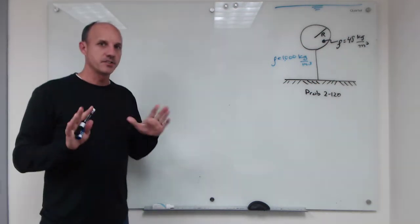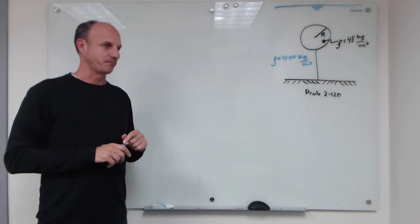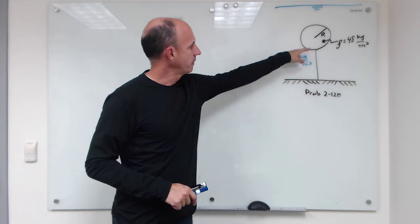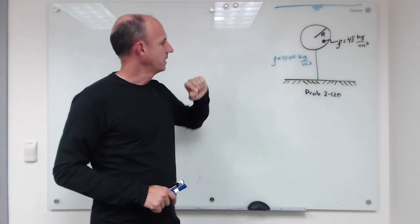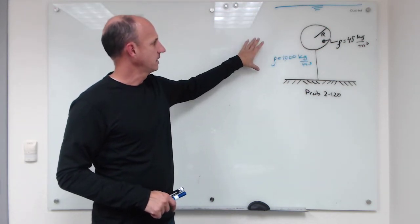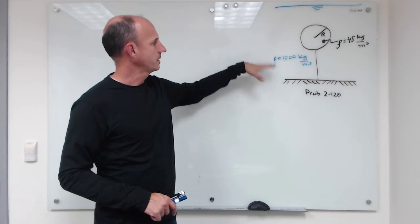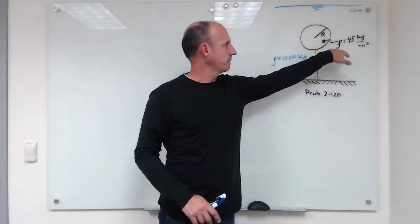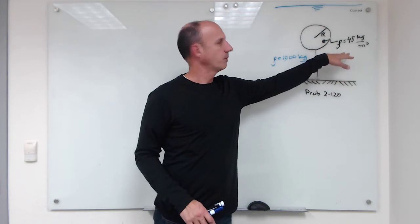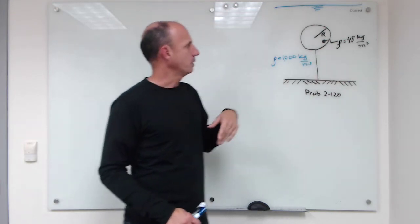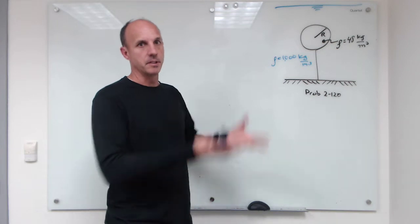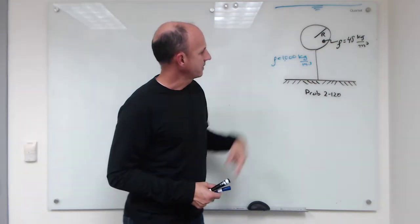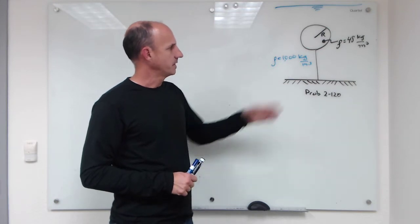Okay, we're going to work through a very simple buoyancy problem here. I've got a plastic ball tethered from a cable and it's sitting in water which has a density of a thousand kilograms per cubic meter. This plastic ball has a density of only 48 kilograms per cubic meter, so it wants to go up. It's feeling the buoyant force, and what's stopping it from going up is this cable. So we're asked to find what is the tension in the cable.